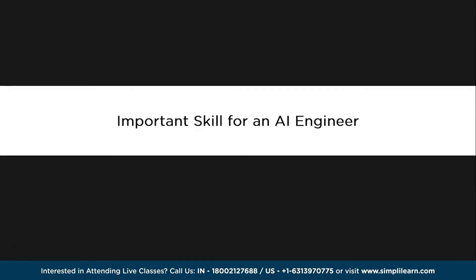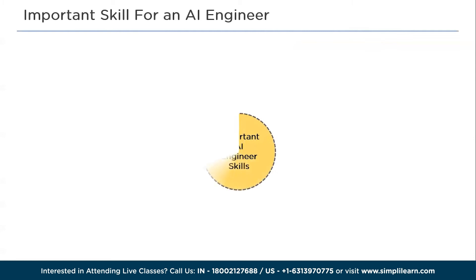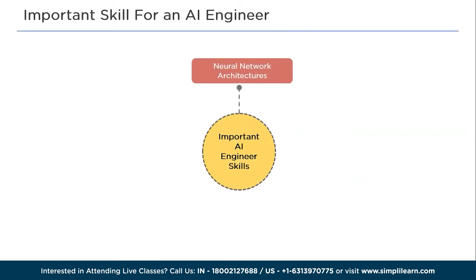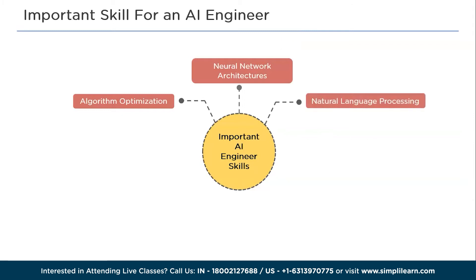Now we will discuss some important skills for an AI engineer. First is neural network architecture — proficiency in designing and implementing various neural network structures to solve complex problems. Second is algorithm optimization — the ability to enhance and fine-tune algorithms for improved efficiency and performance in AI applications. Third is NLP (natural language processing) — skill in developing models that understand and generate human language, enabling applications like chatbots and language translation.